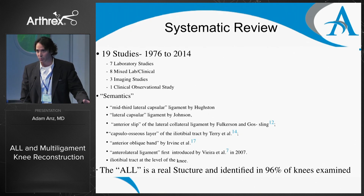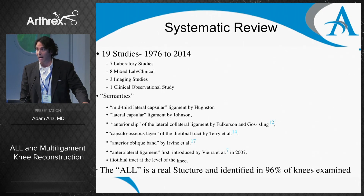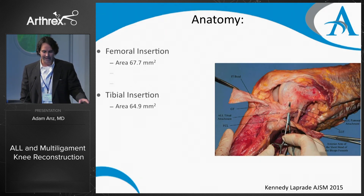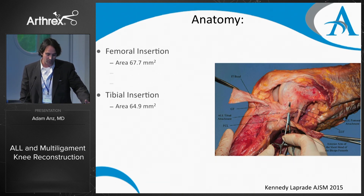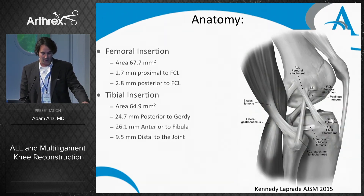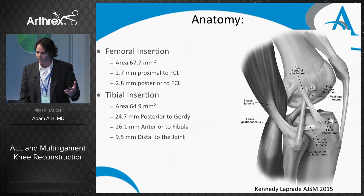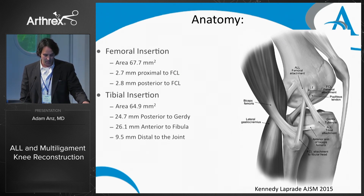The ALL is a real structure — or the lateral complex — and it can be identified in 96% of all knees. The anatomy: from LaPrade's study, the femoral insertion area is about 70 millimeters and the tibial insertion is about 65 millimeters. The femoral attachment is 2.7 millimeters proximal to the FCL and 2.8 millimeters posterior. The tibial insertion is about halfway between Gerdy's tubercle and the anterior fibula, distal to the joint by 9.5 millimeters.